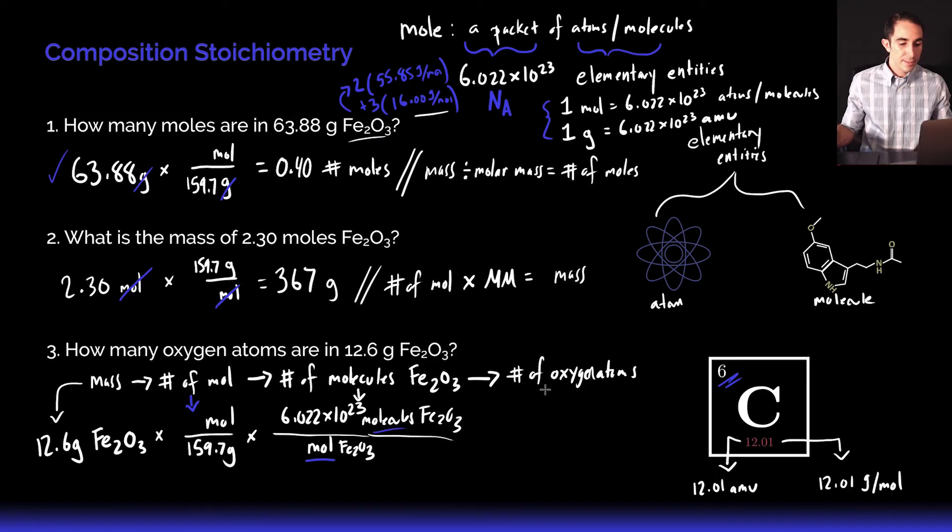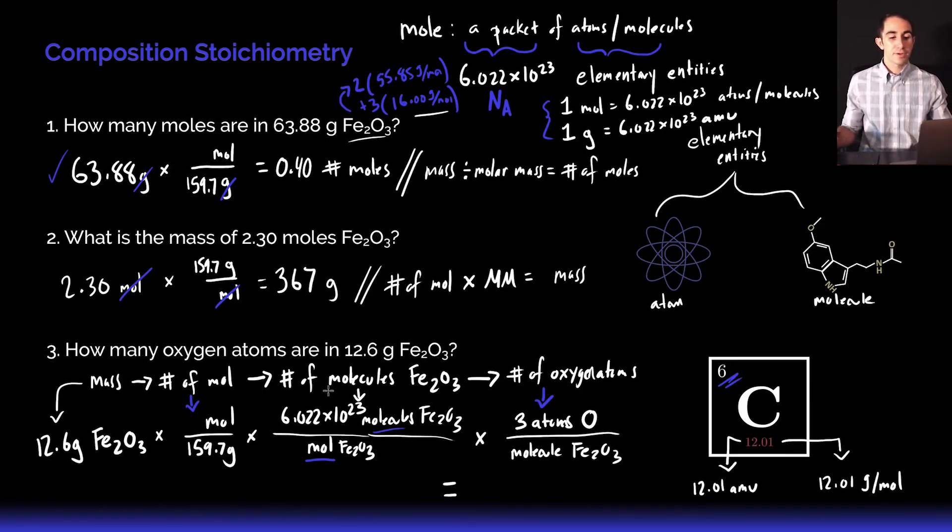That's going to be this step right here, dealing with Avogadro's number. The last step is going to be to get the number of actual oxygen atoms. I have to look at this chemical formula and see that for every molecule of Fe₂O₃, I'm going to get three atoms of oxygen. That's going to give me a giant answer when I plug this into a calculator because I'm taking 12.6 grams times Avogadro's number, 6.022 times 10 to the 23rd, times three, all divided by 159.7. The actual value that I'm going to end up with is 1.43 times 10 to the 25 oxygen atoms.